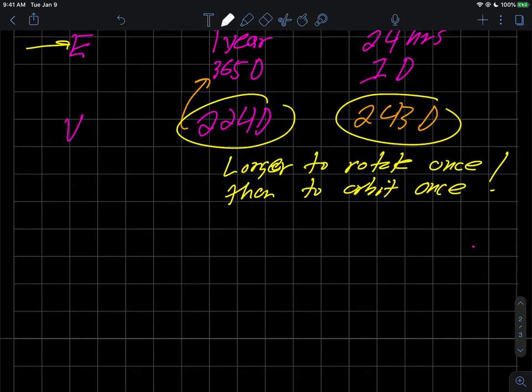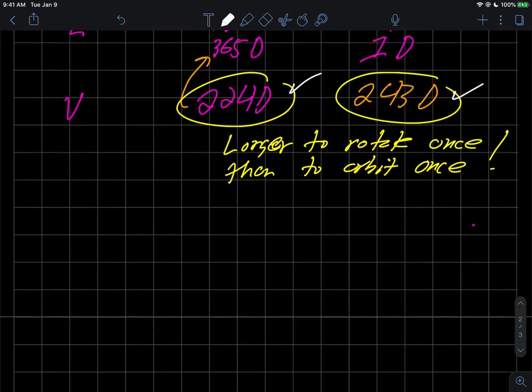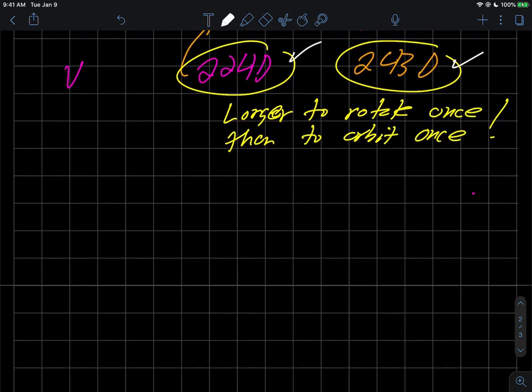The first unusual fact we realize is that Venus's days, the amount of time it takes to rotate once on its axis, is actually longer than its year. So Venus's day is longer than its year. That's probably the first unusual fact about the solar system we have.